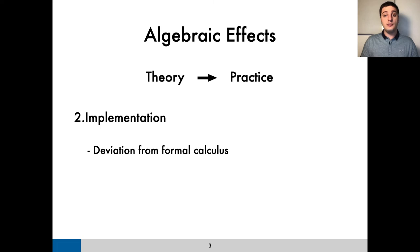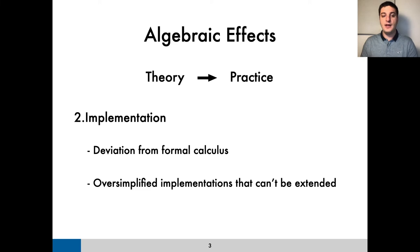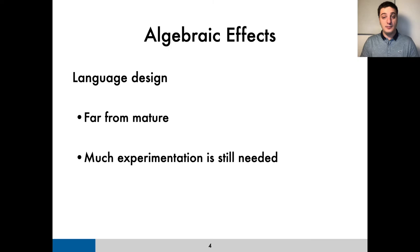The inverse problem can also come up. Sometimes, proposed implementations for core sub-languages omit the treatment of advanced features present in the language, preventing these implementations from being extended into a full language. These problems can make experimenting on these languages harder, as even small variations to the formal calculus may be difficult to incorporate into the language implementation. The design of languages that support algebraic effects is far from mature, and much experimentation still needs to be done, as there's still much to be learned.